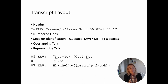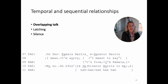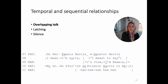Talk is represented exactly as it was produced, not as the transcriber thinks it ought to have been produced — as we can see with Kavanaugh's answer. So the layout of transcripts is not arbitrary, and it helps us understand various interactional dynamics. This brings us now to the second category, which is temporal and sequential relationships. The first element of these is overlapping talk, where two or more people end up speaking at the same time.